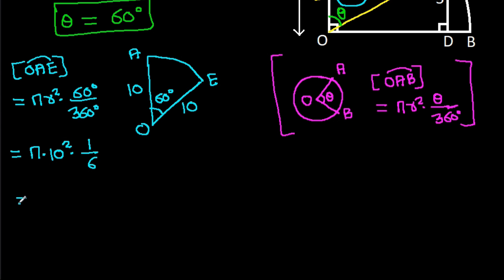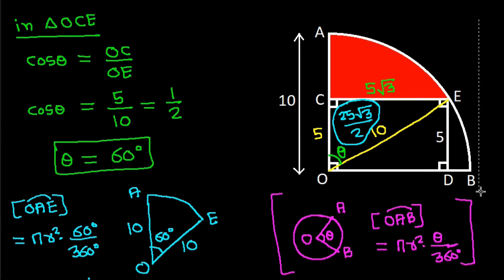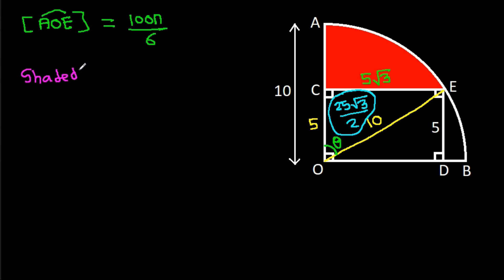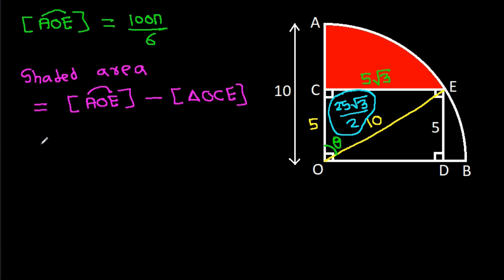The sector area simplifies to 100π/6. The shaded area equals the area of sector OAE minus the area of triangle OCE, which is 100π/6 − 25√3/2.